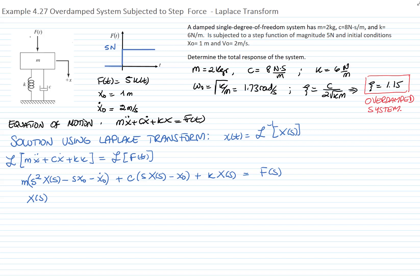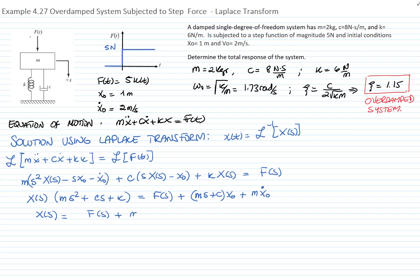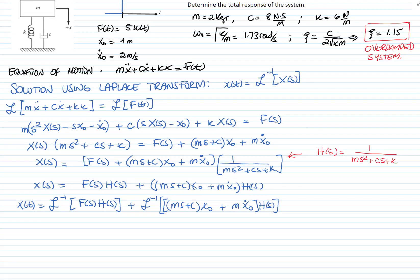We solve for X(s), and the terms that multiply X(s) are ms² + cs + k. That equals what we call the perturbation, which is the Laplace transform of the applied force plus the terms involving the initial conditions. Solving for X(s), I get that the perturbation is multiplied by the transfer function, which is only a function of the system characteristics m, c, and k.